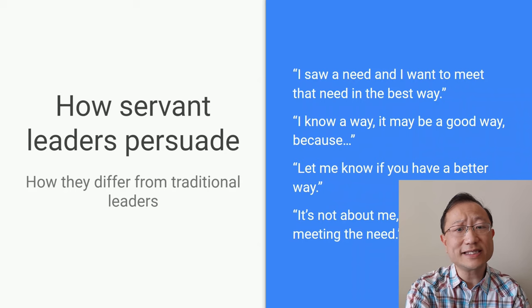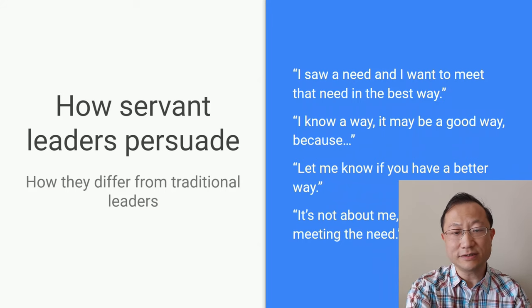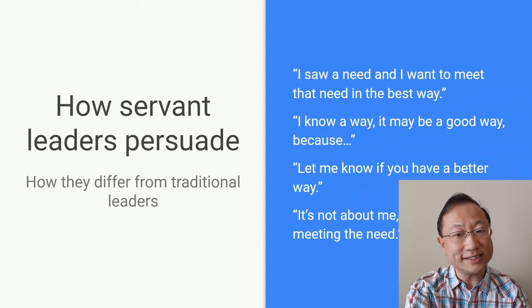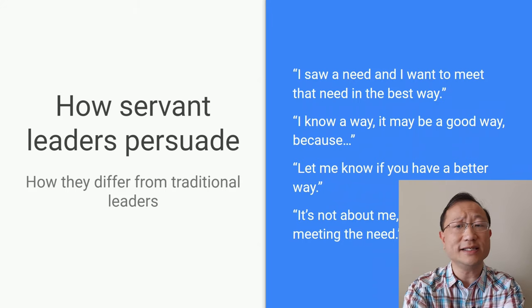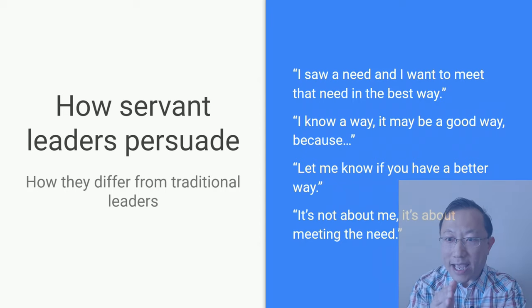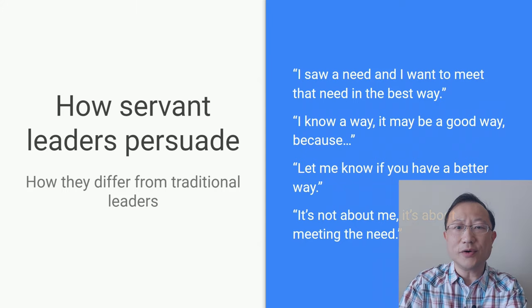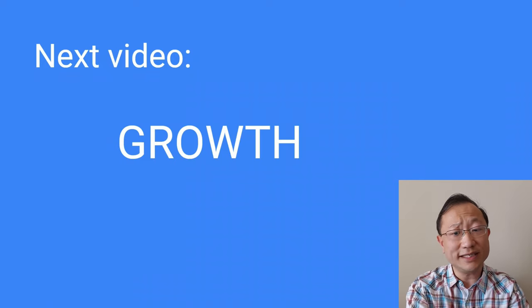Finally, a servant leader persuades slightly different than a traditional leader. A servant leader persuades people to join him, but he is not proud. He is not self-centered. His goal is to serve, not to make a name for himself. People can feel that the attitude is different. He may say something like these, or he may simply embody these in their actions and decisions. Like, I saw a need. I might want to meet that need in the best way. I know a way. It may be a good way, because... Let me know if you have a better way. It's not about me. It's about meeting that need. So, in our next video, we will talk about growth. How a servant leader helps people grow as they work under his or her leadership.